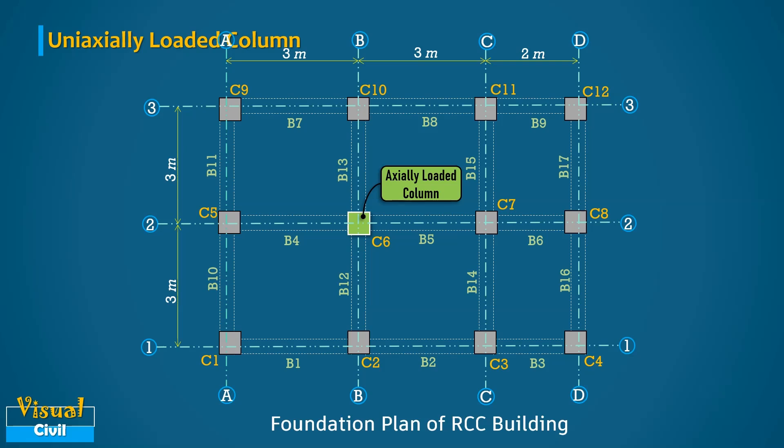In practice, frequently in the column of building structure, the eccentricity about one axis is negligible whereas the eccentricity about the other axis is significant. This situation is encountered in the exterior columns of interior frames in building like C2, C5, C8 and C10 under gravity loads. The column like C7 can also be uniaxially loaded column if the eccentricity along beam B5 and B6 is significant due to unbalanced moment.